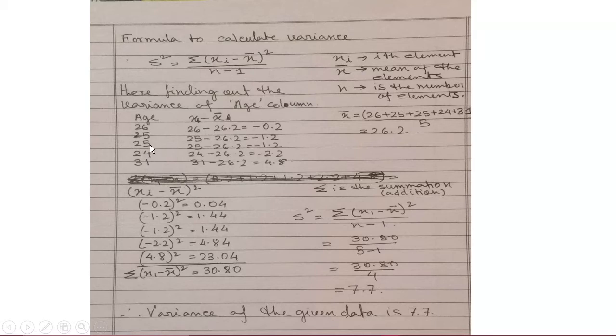Each of the ith element, 0 ith element like one element, second element, third element, first element, second element, third element, fourth element like this starts from 0. And x bar is the mean. Here I am finding out the mean here, 26.2.